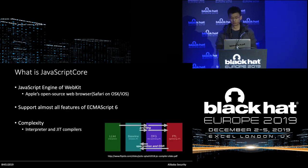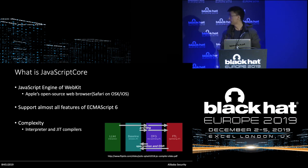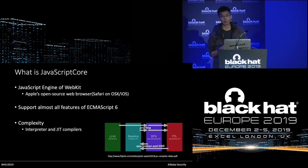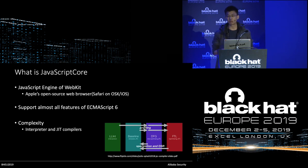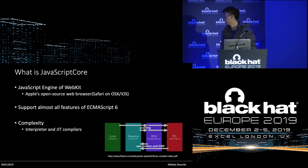So, the first part: what is JavaScriptCore? Basically, it's a JavaScript engine of WebKit, which is Apple's open source web browser. Safari is based on WebKit. Like other JavaScript engines, JavaScriptCore supports almost all the features of ECMAScript 6. JavaScriptCore is also complex — it consists of four tiers: the low-level interpreter, the Baseline, DFG, and the FTL JIT compilers.